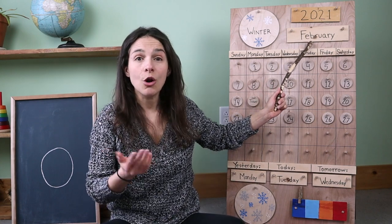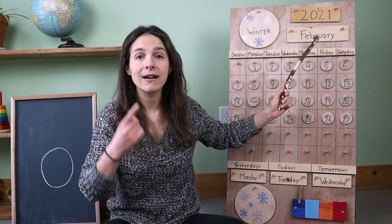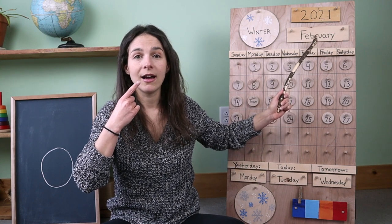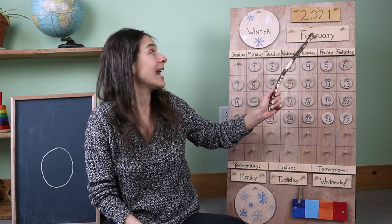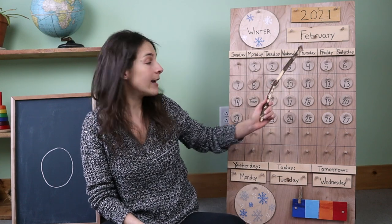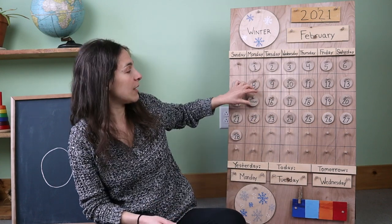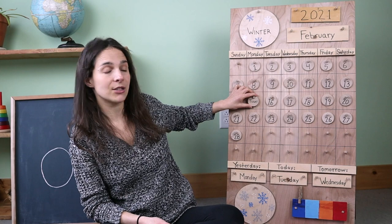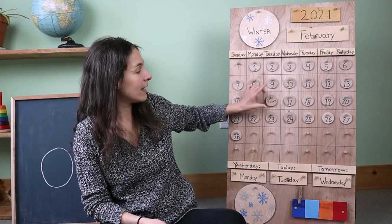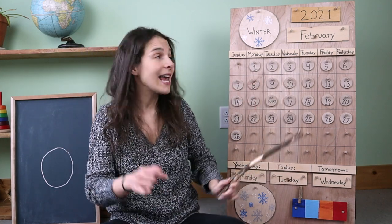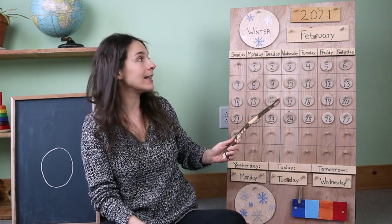Do you know what the month is? I'll give you a hint — fuh, fuh. February. That's right, friends. And today is February 16th. So let's move the chip over from yesterday to today. And we'll say today is February 16th.